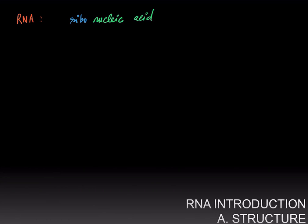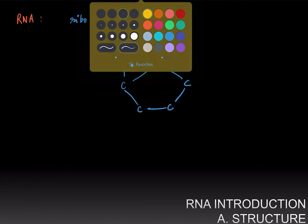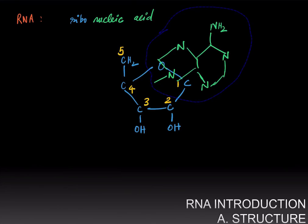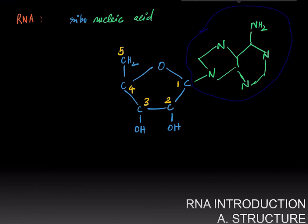RNA is ribonucleic acid. 'Ribo,' just as in DNA, refers to the ribose sugar with its five carbons, which are numbered in the same way as in DNA. We have hydroxyl groups, as ribose would have, on the second and third carbon. We would also have a nitrogenous base on the first carbon — for instance, adenine.